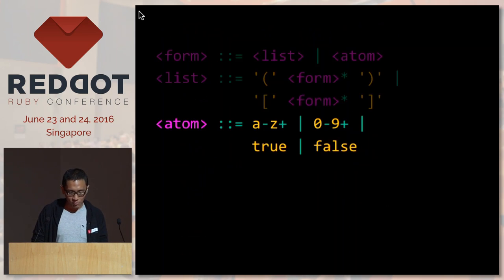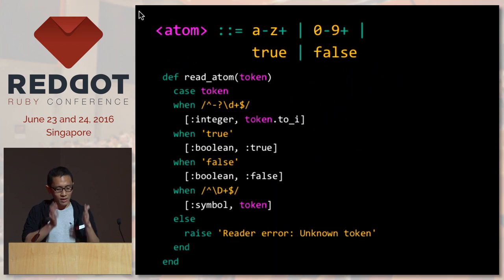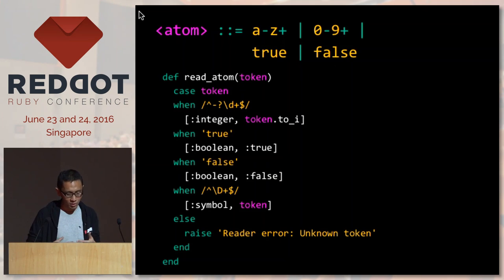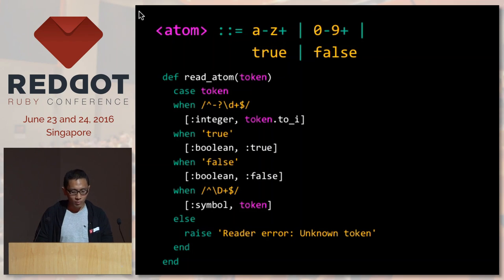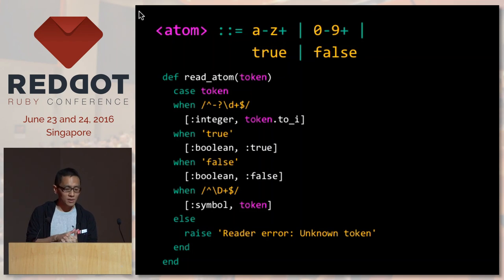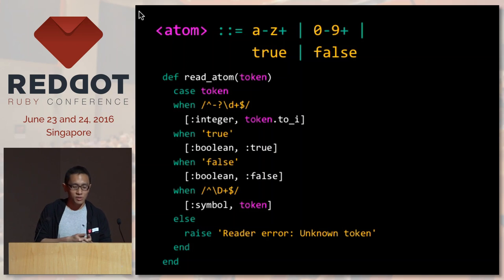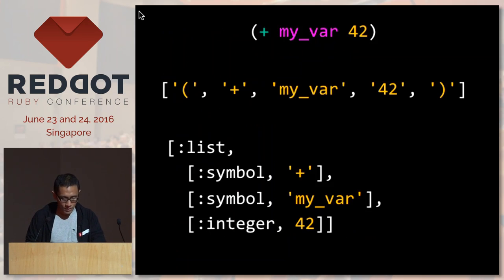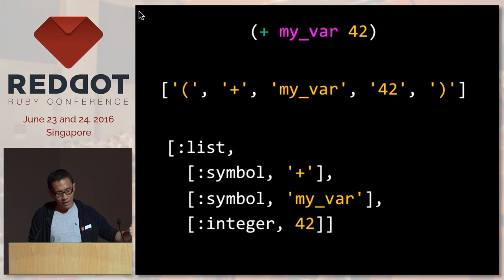For our last rule — atom — since there are a few cases of strings, I'll put it into a case/when statement, comparing against regular expressions and strings. If it's an integer, I'll return the integer symbol along with the token itself. To recap: I've converted my code into tokens, and my tokens are transformed into S-expressions.